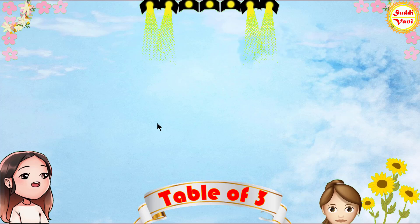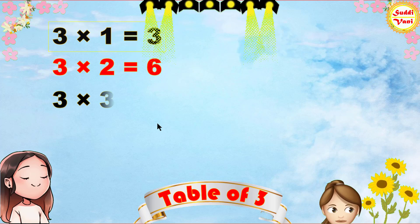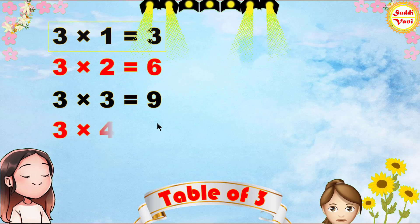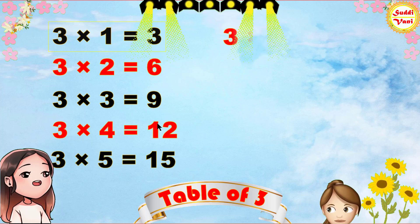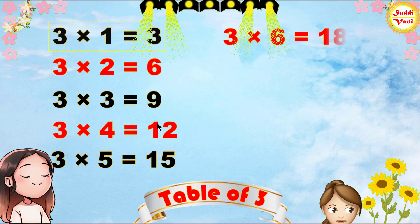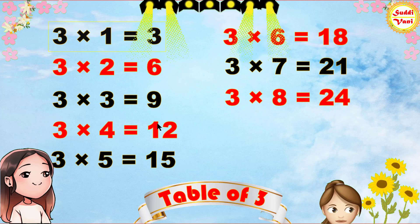Once again: 3 times 1 is 3, 3 times 2 is 6, 3 times 3 is 9, 3 times 4 is 12, 3 times 5 is 15, 3 times 6 is 18, 3 times 7 is 21, 3 times 8 is 24.